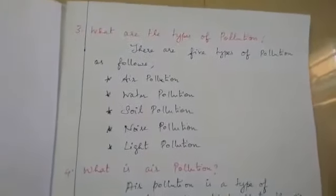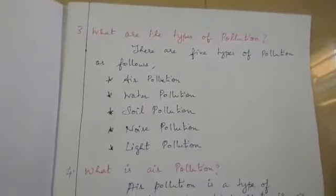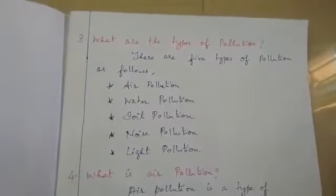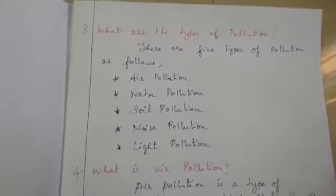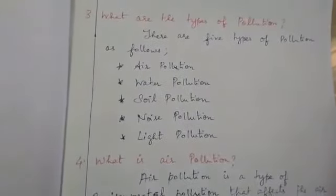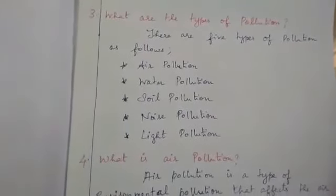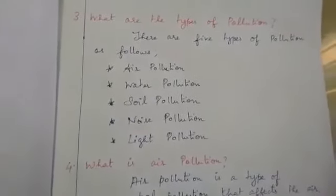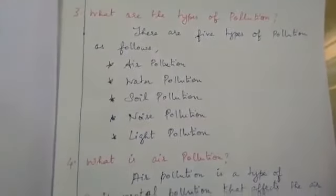What are the types of pollution? There are five types of pollution: air pollution, water pollution, soil pollution, noise pollution and light pollution.